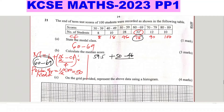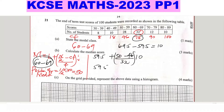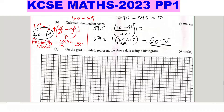f is the frequency of the median class, which is 32. i is the class size of the median class — 69.5 minus 59.5 gives 10. So the median is 59.5 plus (50 minus 46) divided by 32, multiplied by 10 — that is 59.5 plus 4 divided by 32 times 10, which equals 59.5 plus 40/32, giving a median score of 60.75.